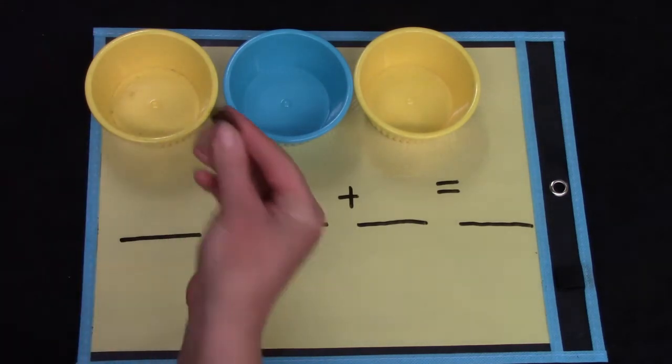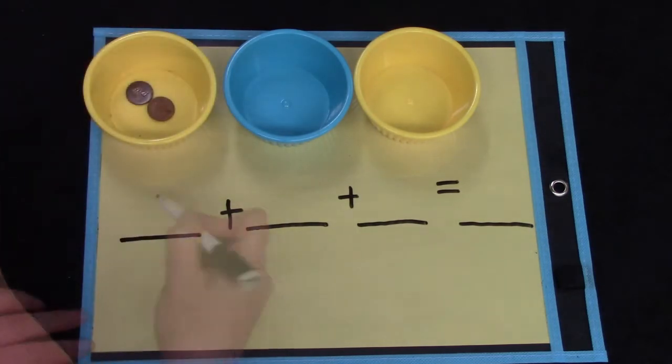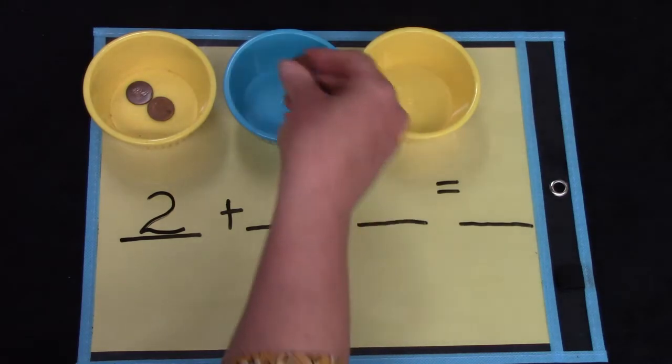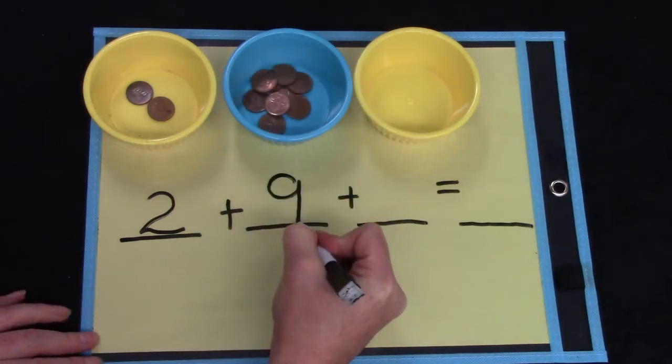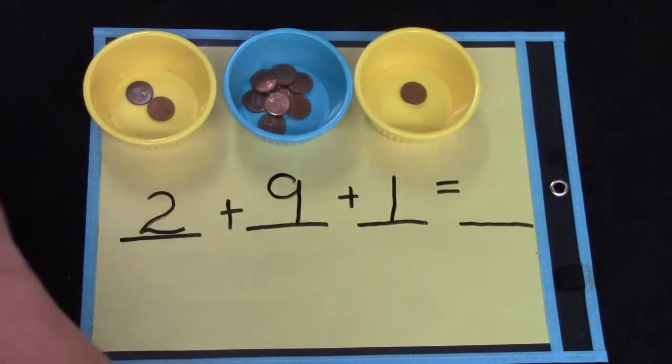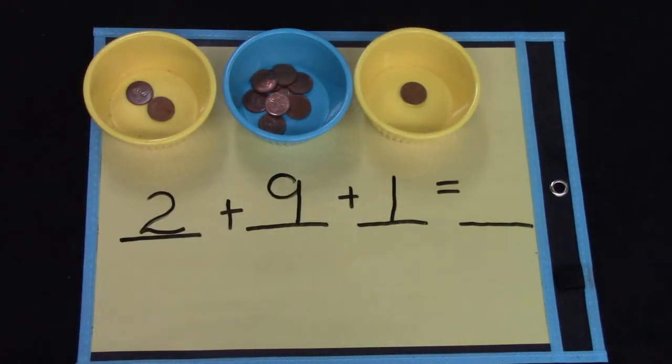So if I have two pennies, two pennies, plus nine pennies, two plus nine, plus one. How many pennies do I have all together?